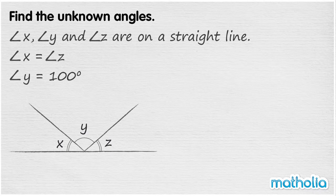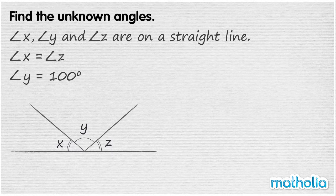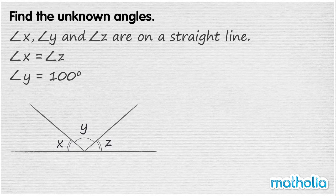Find the unknown angles. Angle X, angle Y and angle Z are on a straight line. Angle X is equal to angle Z. Angle Y equals 100 degrees. We need to find angle X and angle Z.